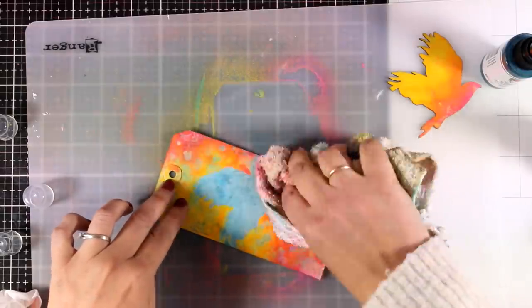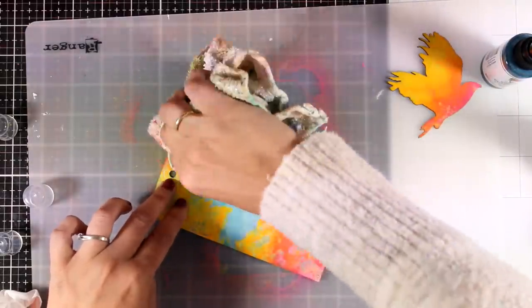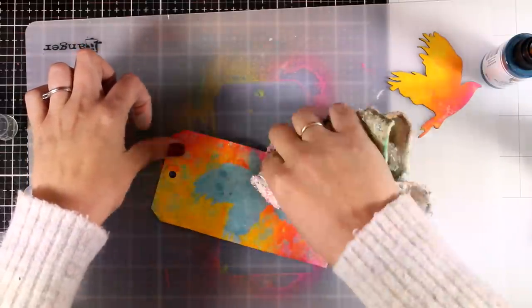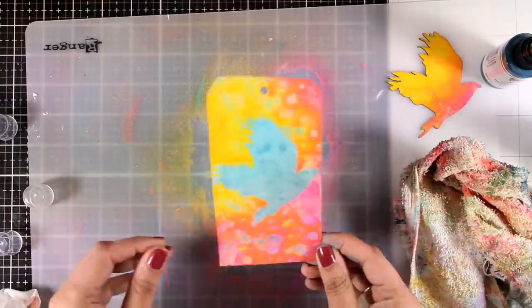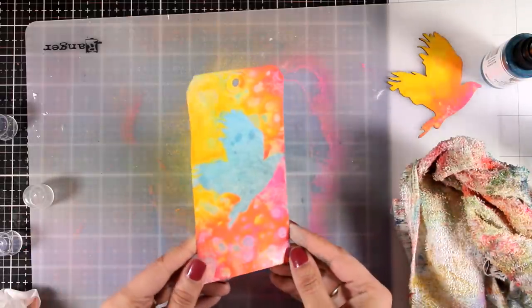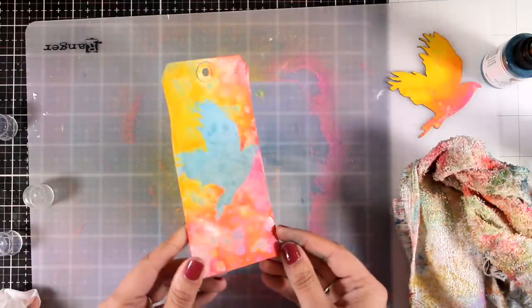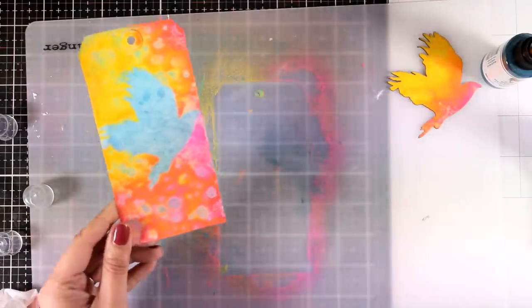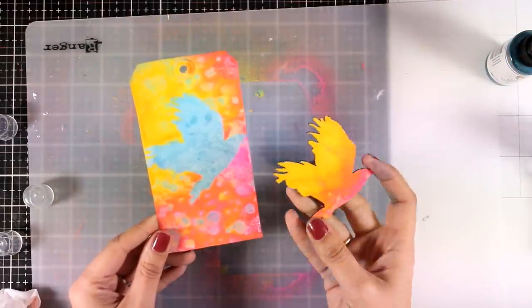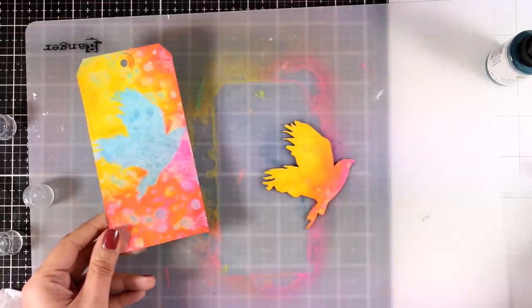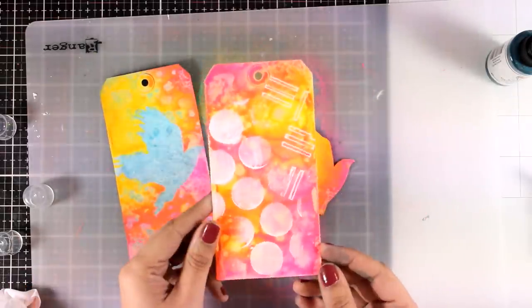So, I'm going to dab it with a paper towel, or a cloth, like I'm doing here. And you can see the wonderful result. So, I got my bird to be blue and it resisted the rest of the colors. So, basically, I was playing with my new sprays, trying to see all the new properties. And I ended up having this lovely bird, a chipboard shape, as well as a couple of tags.